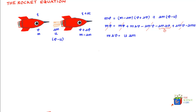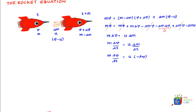If we divide both sides by delta t, what we get is m·delta v divided by delta t is equal to u·delta m divided by delta t. And if we apply the differential form — that is, assume delta v, delta t, and delta m to be infinitesimally small — what we get is m·dv/dt is equal to u times minus dm/dt.